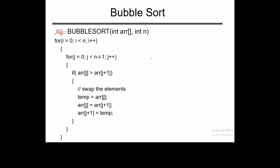Now let's look at the algorithm of bubble sort. There is an outer loop executing from i equal to 0 to i less than n. Then there is a nested inner loop used for comparison and swapping, executing for j equal to 0, j less than n minus i minus 1, j plus plus. If array[j] is greater than array[j+1], then these two elements are swapped. This is the swapping procedure.